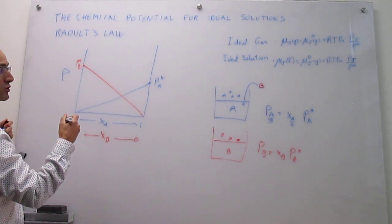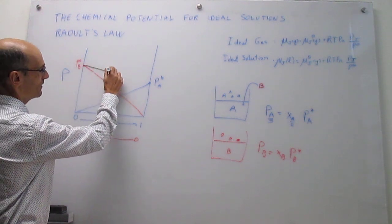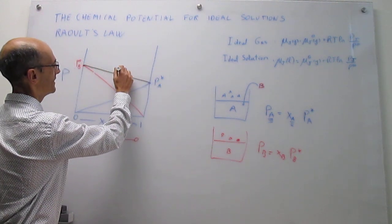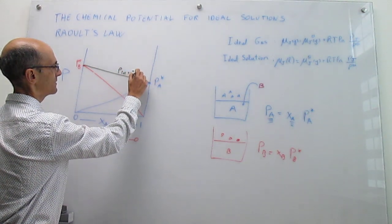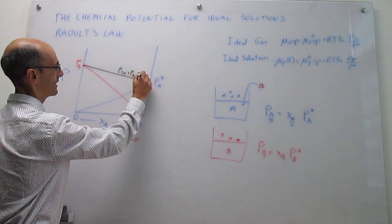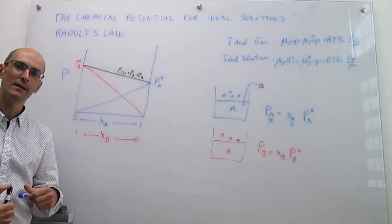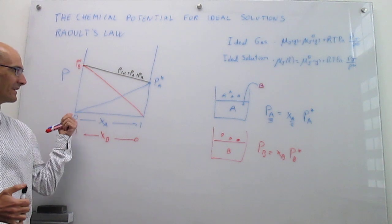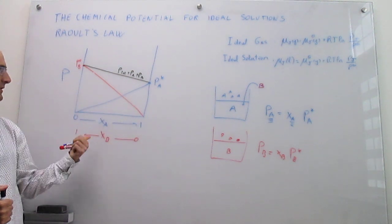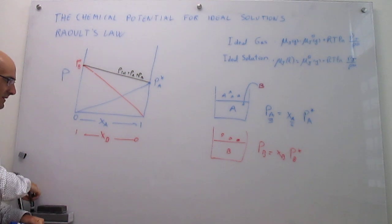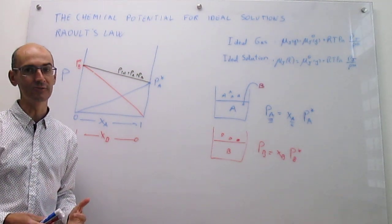What is more, you can write the total pressure on top of that liquid mixture, which is just P_tot equal to P_A plus P_B. The condition for finding this linear dependence of the vapor pressure on the mole fractions of the liquid requires an ideal solution.